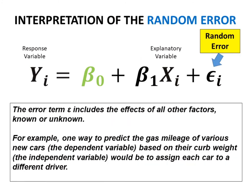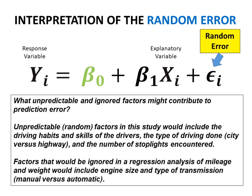Interpretation of the error. The error term includes the effects of all other factors, known or unknown. For example, one way to predict the gas mileage of various new cars, which is the dependent variable, based on their curb weight. The independent variable would be to assign each car to a different driver. What unpredictable and ignored factors might contribute to prediction error?